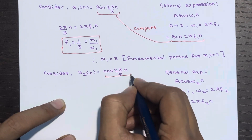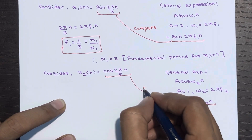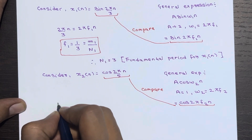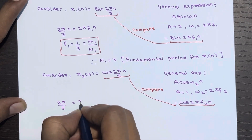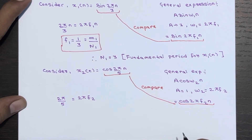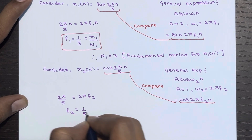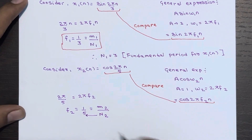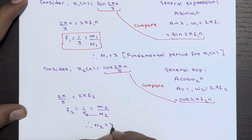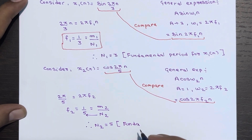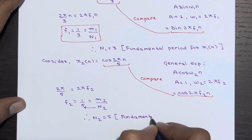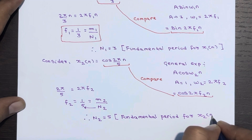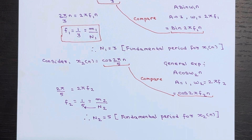After comparison, we get 2π/5 = 2π·f2, so f2 = 1/5, which we write as m2/n2. Therefore N2 = 5, which is the fundamental period for x2(n).